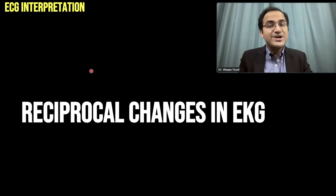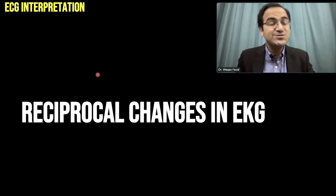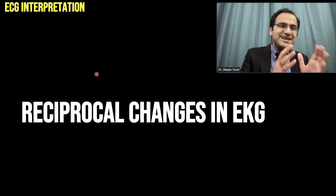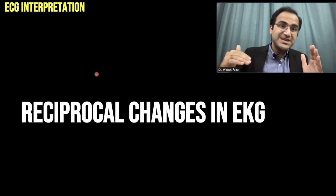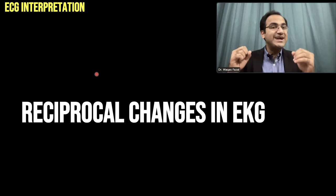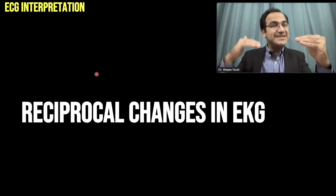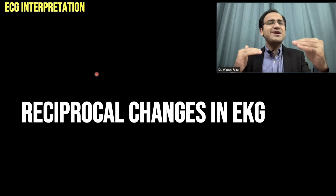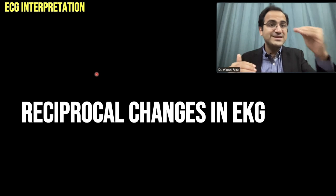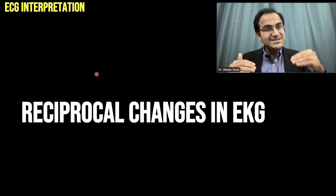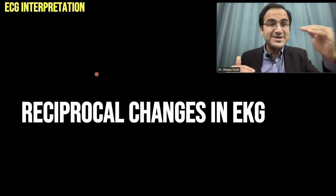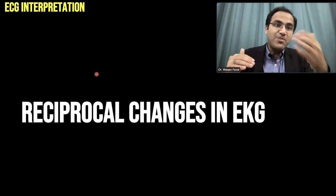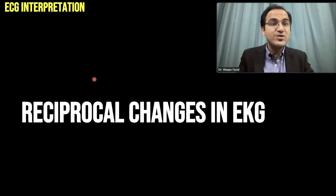Now coming to a very important point: reciprocal changes in ECG in patients with ST segment elevation MI. Whenever someone gives you an ECG with ST segment elevation in a few leads, you will find ST segment depression in the other leads. These ST segment depressions are basically reciprocal changes — they do not indicate sub-endocardial ischemia. The ST segment elevation causes a reciprocal change due to current flow, resulting in ST segment depression in the opposite lead.